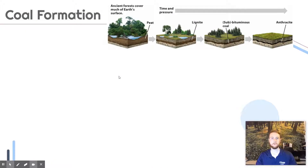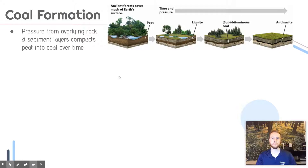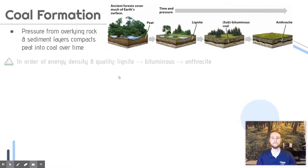Now we'll talk about coal formation, picking up right where we left off with peat. In coal formation, peat is compressed by overlying rock layers or sediments into coal over long periods of time. All of that heat and pressure from the overlying rock basically squeezes out the excess water, excess air, and other materials, leaving us with just hydrocarbons — just coal. The longer a coal deposit is pressurized and the deeper in the ground it is, the more energy dense it will be.